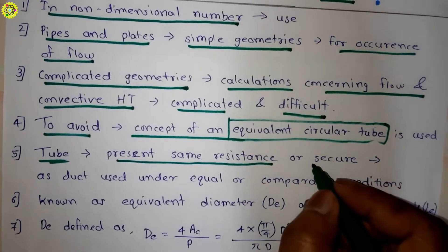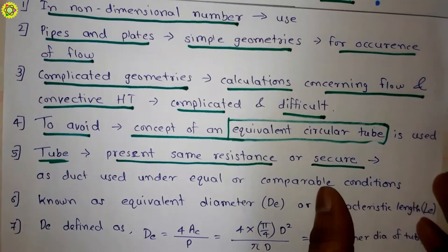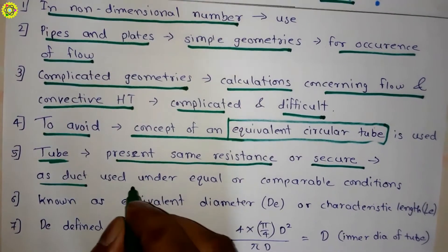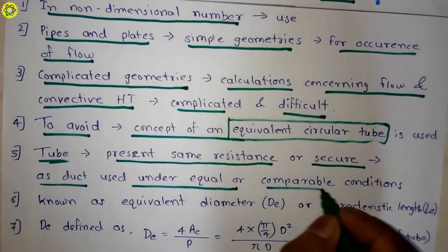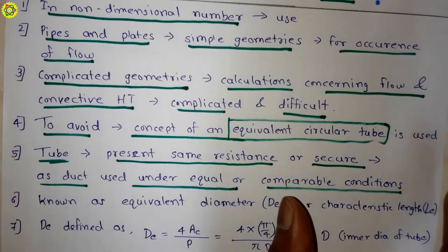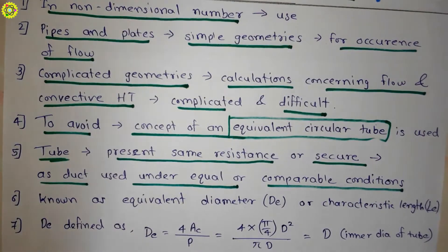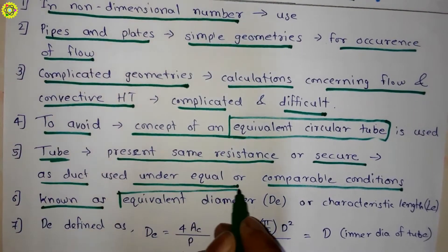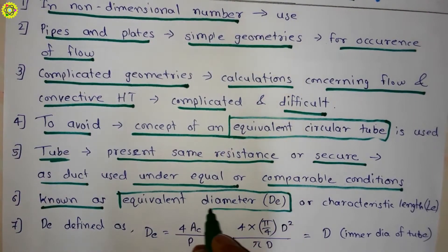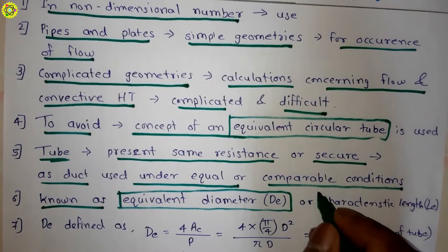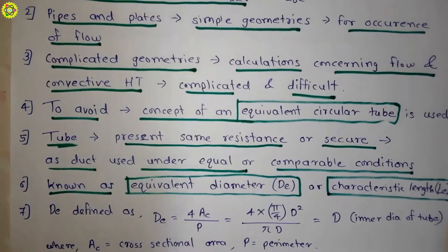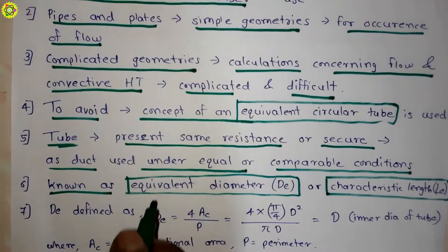This equivalent circular tube presents the same resistance against the flow and secures the same heat transfer as the duct used under equal or comparable conditions. The diameter of this equivalent tube is known as equivalent diameter de, or we can say characteristic length le.